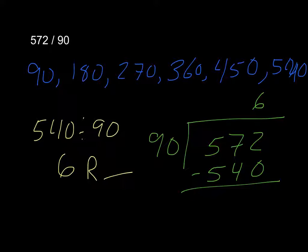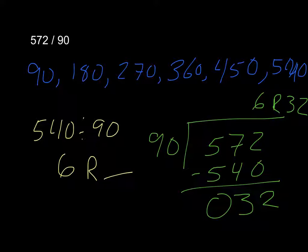So I have 6 with a remainder of 32. The reason that I have a remainder here is because I have 6 groups of 90 with 32 left over, but 32 is not enough to go into 90. So instead of doing a decimal, I'm just saying I have a remainder of 32.